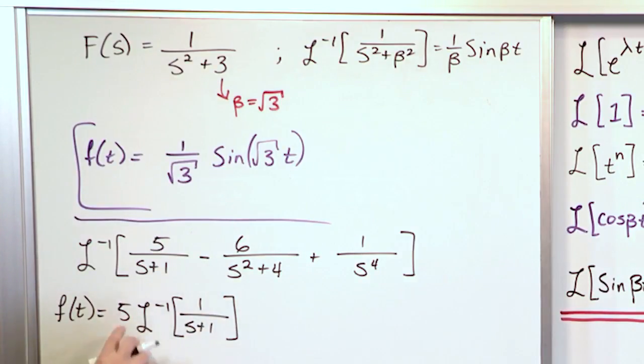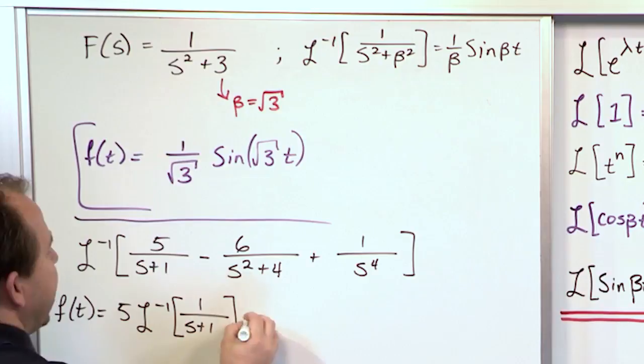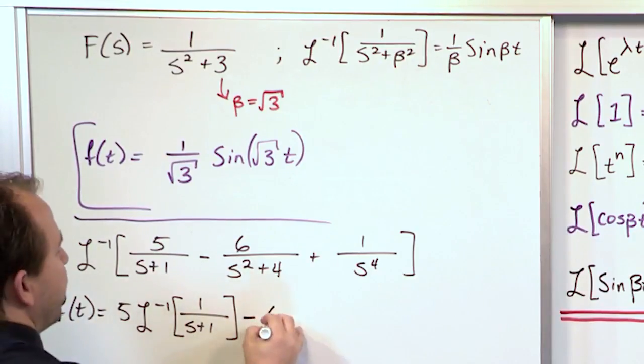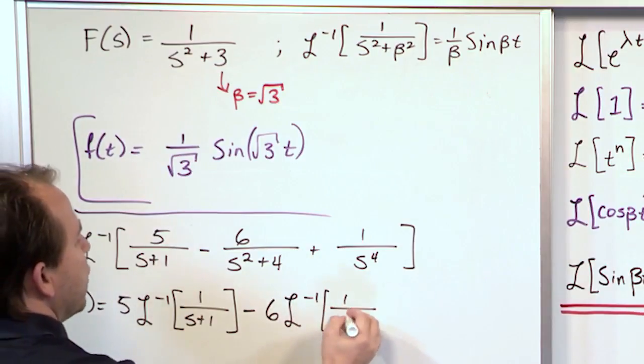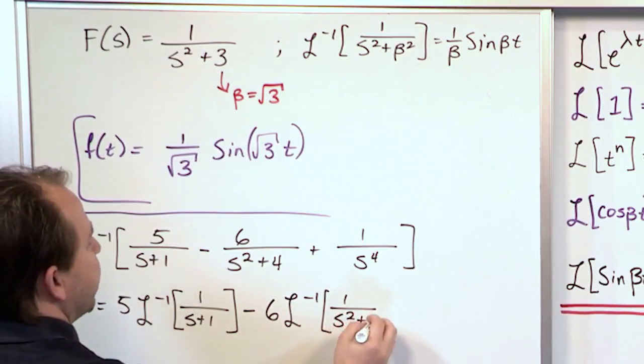Make sure you understand that. The 5 just basically comes out. We just carry the minus sign through. Then we can pull the 6 out because it's just multiplied and we'll have the inverse Laplace transform of 1 over s squared plus 4.